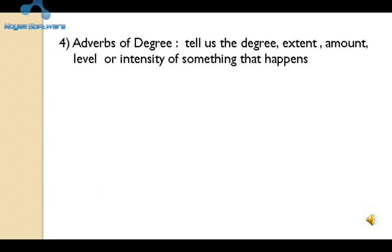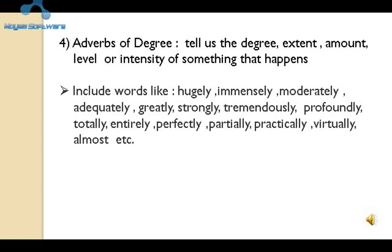अलग-अलग प्रकार के functions के आधार पर adverbs के प्रकार बदलते हैं। Adverbs of degree में हम degree, extent, amount, level और intensity of something that happens के बारे में बात करते हैं। जो भी कुछ हुआ है उसकी intensity किस प्रकार की थी, इस विशेष चीज़ के बारे में हम यहाँ पर बात करते हैं।